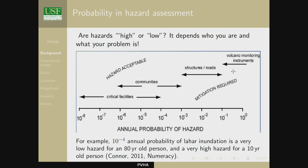Think about the ranges of probability we care about in volcanic hazard assessment. If Diana or Tobias are going to put an instrument on a volcano, maybe they accept a 50-50 or 1 in 10 chance that instrument will be destroyed in a given year. For infrastructure like the Southern Ring Road in Iceland, society accepts that the road will be destroyed by volcanic activity every decade or few decades — roughly a 1 in 100 or 1 in 10 chance of destruction.